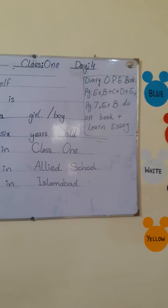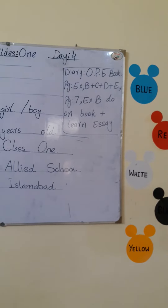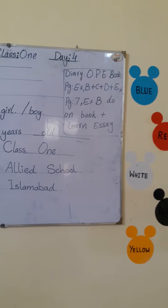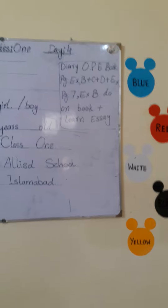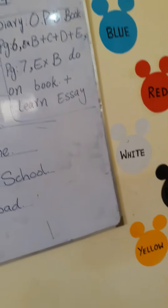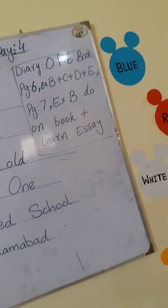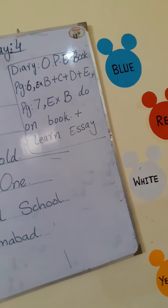Now for the diary — that is the Oxford Progressive English book. Turn to page six. Do exercises B, C, D, and E on the book, using 'he,' 'she,' and 'it.' Then turn to page seven and do exercise B only, also on the book.